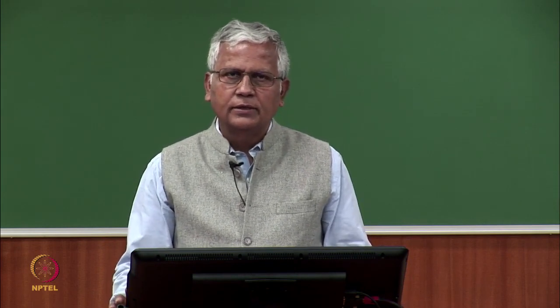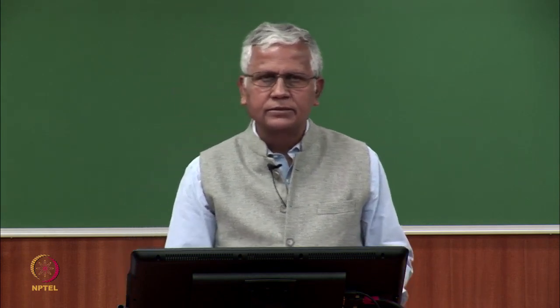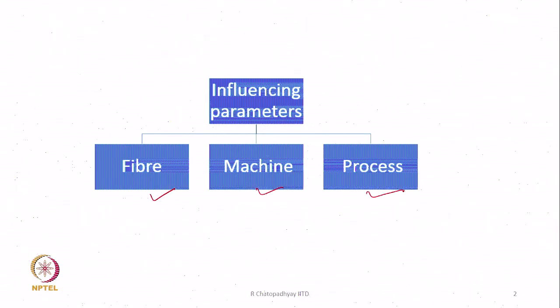Today we are going to discuss the influence of machine and process parameters, and we will also see the effect of fibre parameters. Basically, these are fibre, process, and machine parameters on the quality of the yarn, or how yarn properties are affected by these variables. The influencing parameters are fibre, machine, and process.